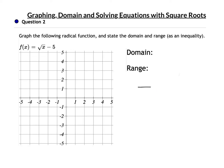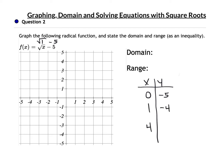For question 2, the same thing is true — pick perfect squares. The square root of 0 is 0, and 0 minus 5 would be negative 5. Plug in 1: the square root of 1 is 1, and 1 minus 5 would be negative 4. The next perfect square is 4: the square root of 4 is 2, and 2 minus 5 is negative 3. Plotting (0, -5), (1, -4), and (4, -3), notice it's exactly the same graph — just moved down 5.